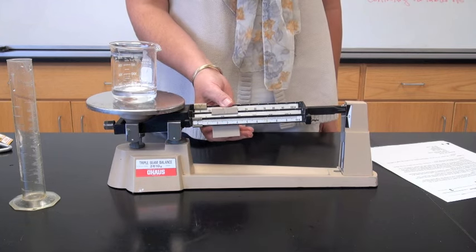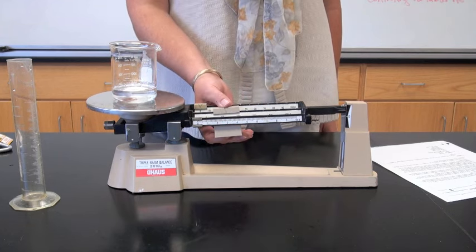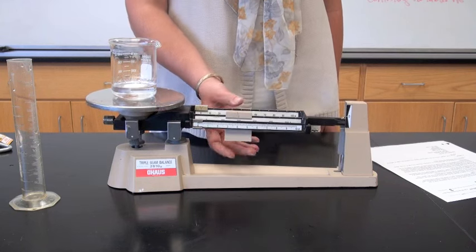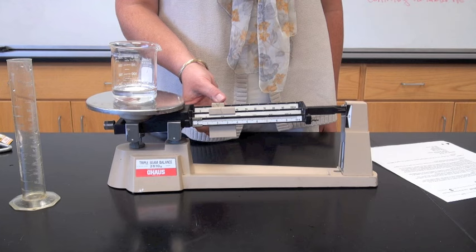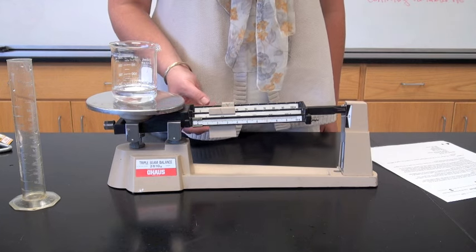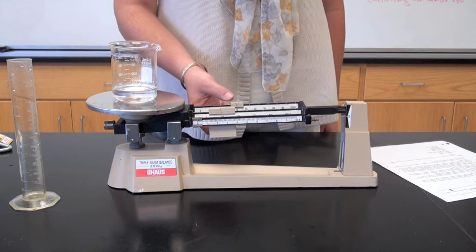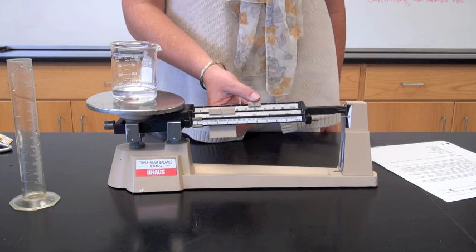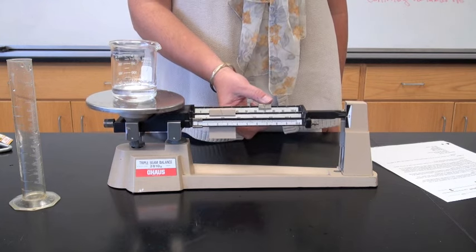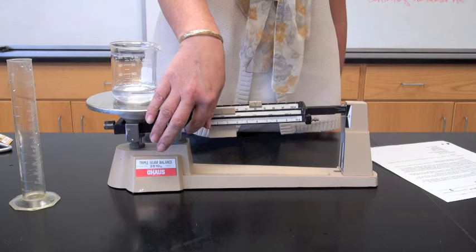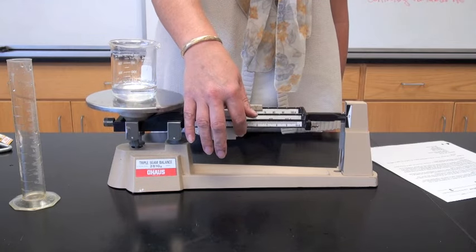Move the 100 gram rider first, and again, it drops, so I move it back one notch. Now I use the ten grams. Ten, twenty, thirty, forty, fifty, sixty, seventy, it drops. I move it back to sixty. Now I use the little one, until it zeroes out.